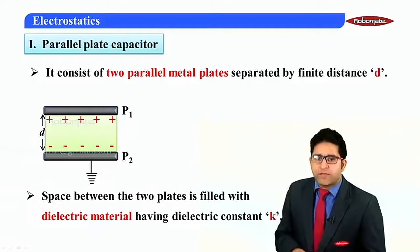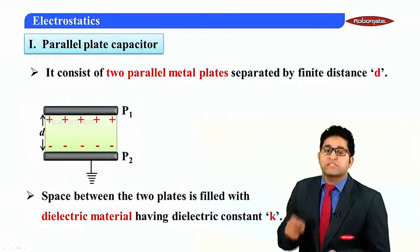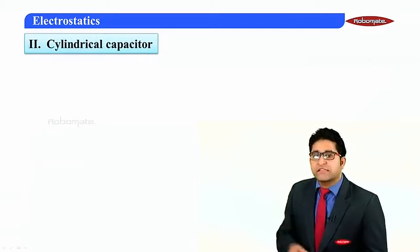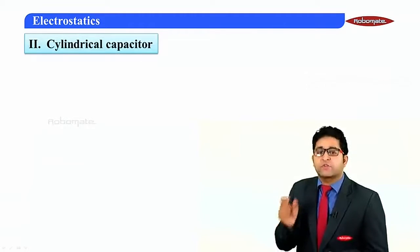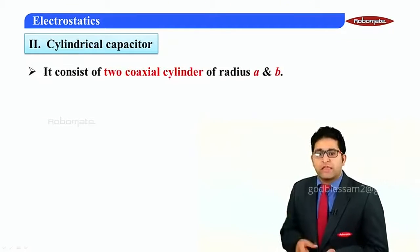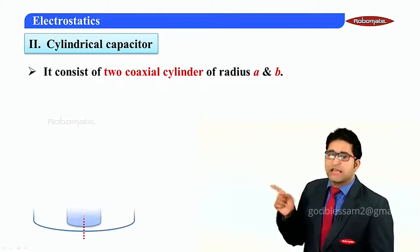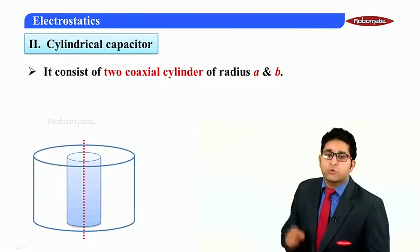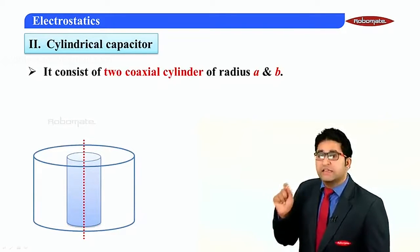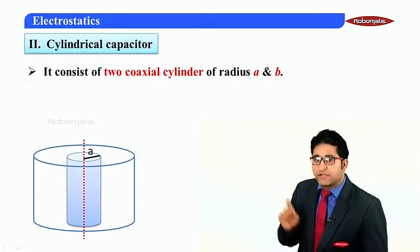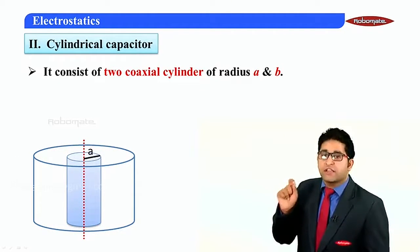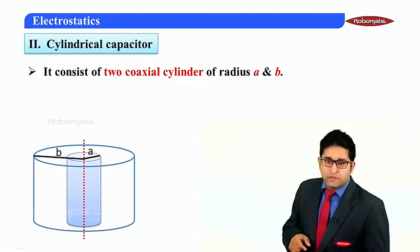Now let us move towards the second type of capacitor, which is the cylindrical capacitor. A cylindrical capacitor consists of two coaxial cylinders having radius small a and radius small b. The inner cylinder has radius small a and the outer cylinder has radius small b.